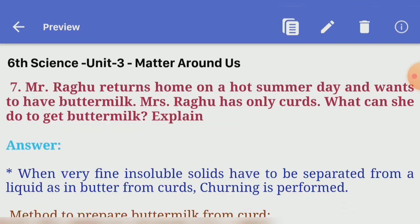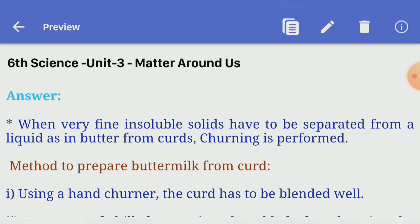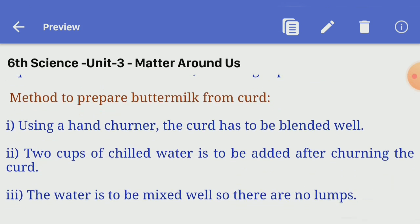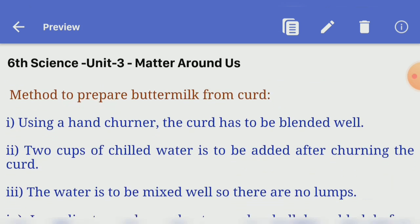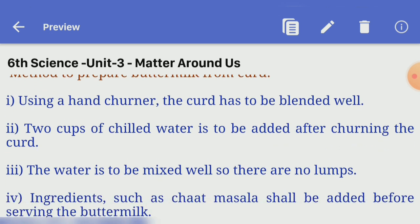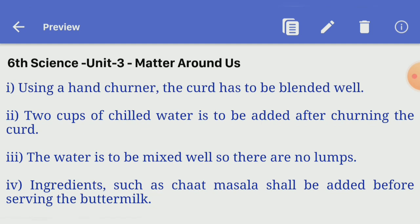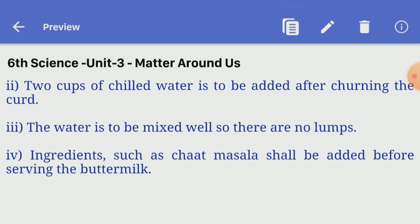Sixth question: what is meant by food adulteration? Answer — food adulteration is the process in which the quality of food is lowered either by addition of inferior quality material or by extraction of valuable ingredients. Seventh question: Mr. Ragu returns home on a hot summer day and wants buttermilk; Mrs. Ragu has only curds — what can she do? Answer — churning is performed. Using a hand churner, blend the curd well. Add two cups of chilled water after churning the curd. Mix well so there are no lumps. Ingredients such as chaat masala can be added before serving the buttermilk.